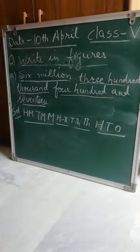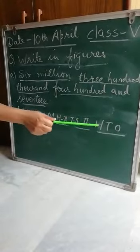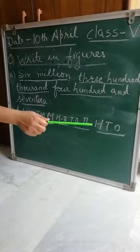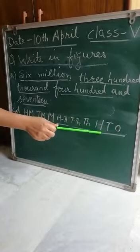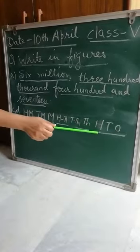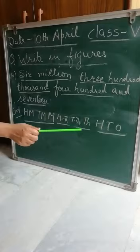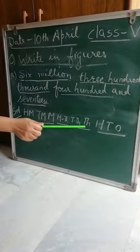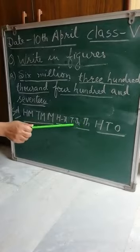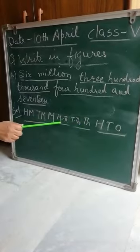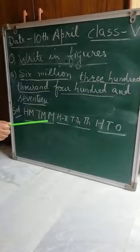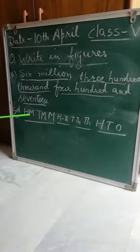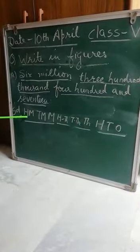Now first we start with the place values of the international system. Ones, tens, hundreds — this is one group. The other period is thousand, ten thousand, hundred thousand. The third period is million, ten million, and hundred million.